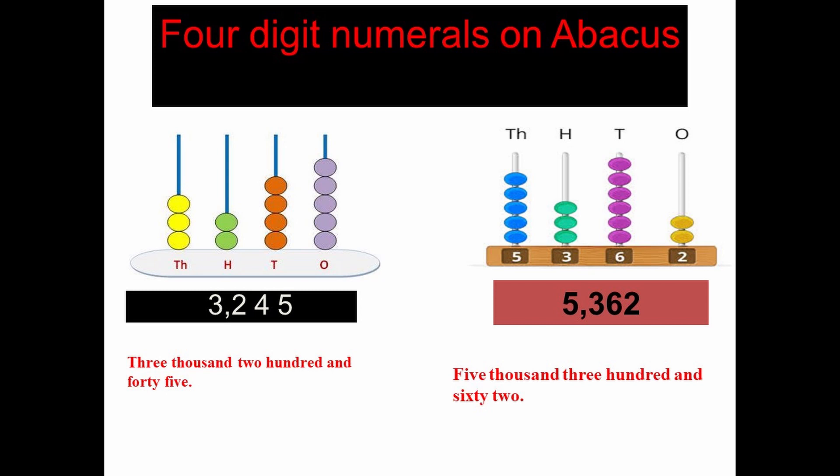In the first example: ones place has five beads, tens place has four beads, hundreds place has two beads, and thousands place has three beads. So the number is three thousand two hundred and forty five (3245).